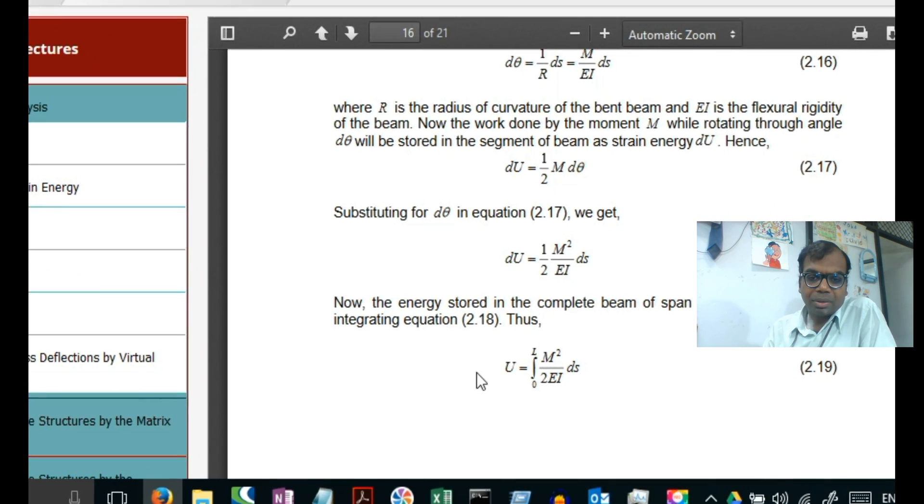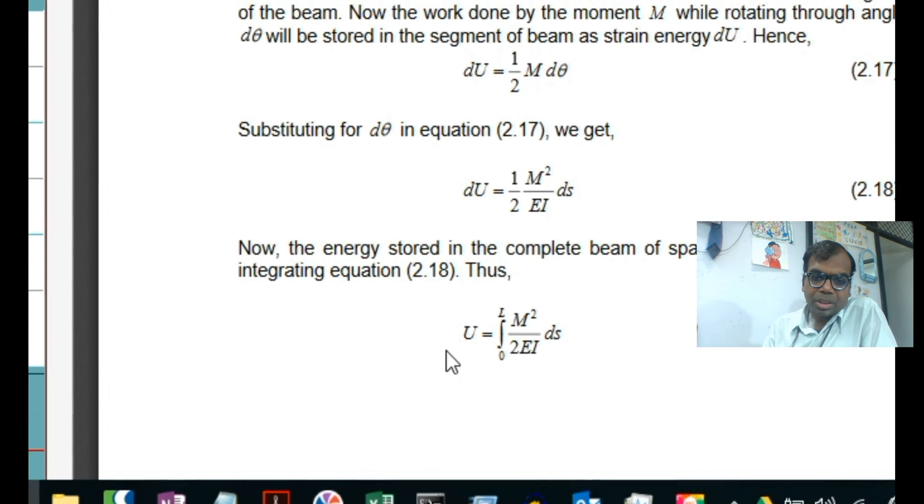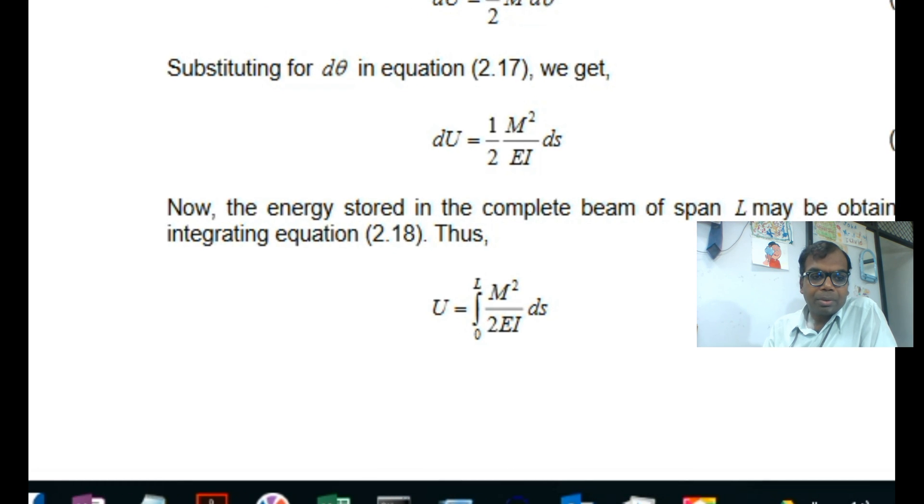If you want to go through the derivation, I suggest the NPTEL course where you'll find that the total energy stored in the beam has been brought out. We're going to use the principle or theorem of least work, which states: for any indeterminate structure, the redundants should be such that the total energy within the structure is minimum. Whenever there's a change, nature doesn't like to have a very huge difference of anything, so the internal energy is going to be a minimum.